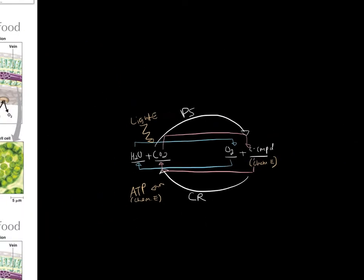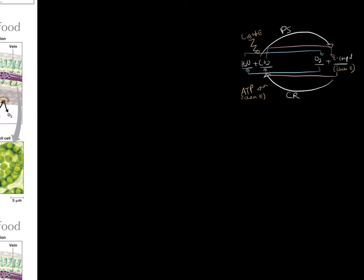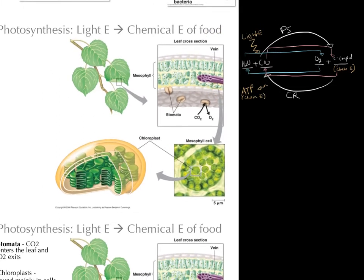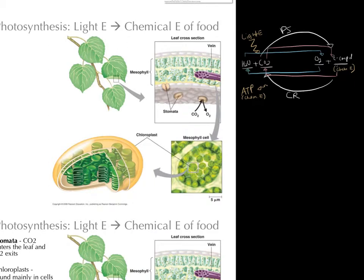Looking at photosynthesis, one of the things you need to remember is where this is occurring. In plants, it occurs in the green parts, primarily leaves, but also sometimes stems adapted to different environments, like a cactus.